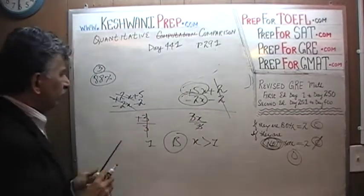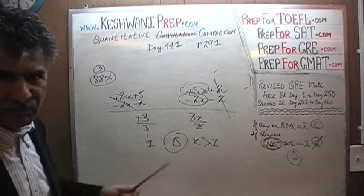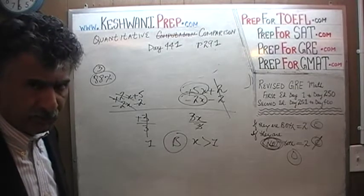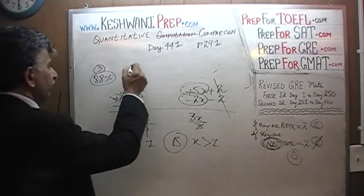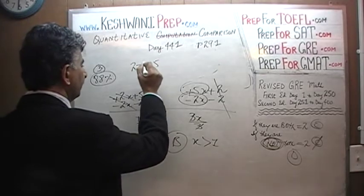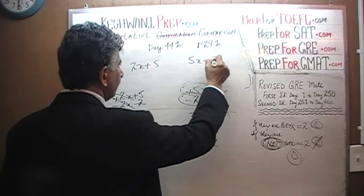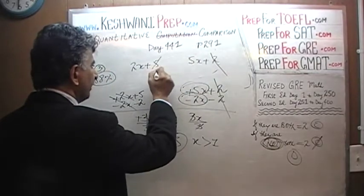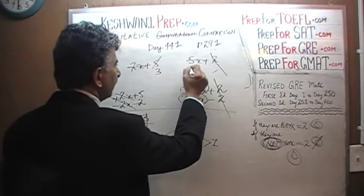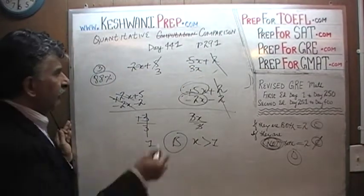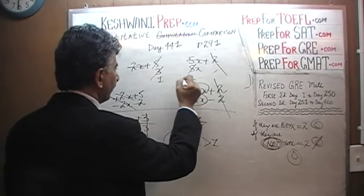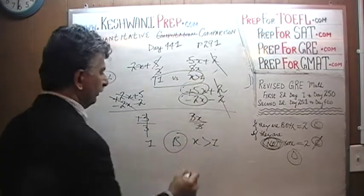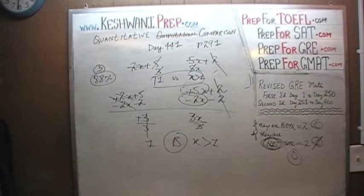Let's redo this problem without the baby steps, which is what you would do in a real exam. Column A: 2x plus 5 versus Column B: 5x plus 2. Subtract 2 from both sides — 5 becomes 3. Subtract 2x from both sides — 5x becomes 3x. Divide both columns by 3 — and we end up with 1 versus x. We know x is more than 1, therefore the answer is B.